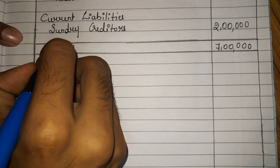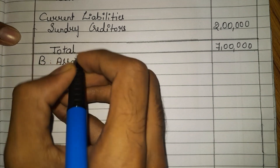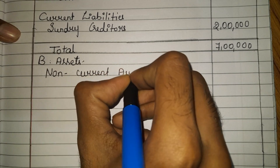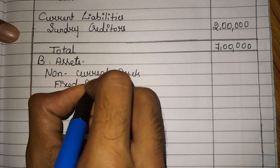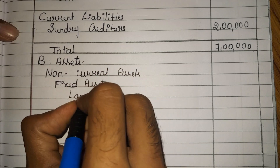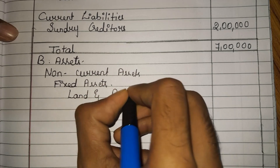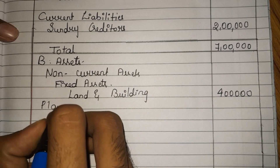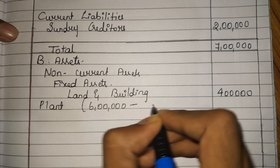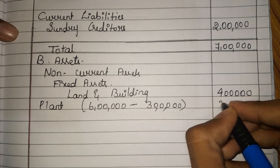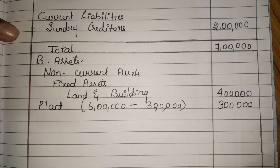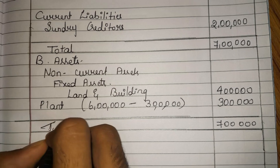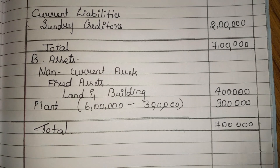The next component is the assets side. First we take non-current assets — under fixed assets we have land and building with a value of 4 lakh rupees. Next we have plant — in the balance sheet the actual plant value was 6 lakh, but we reduced it by 3 lakh in our journal entry, so the remaining value is 3 lakh. Adding 4 lakh and 3 lakh gives 7 lakh, which is the total asset side. This is how we solve the problem.